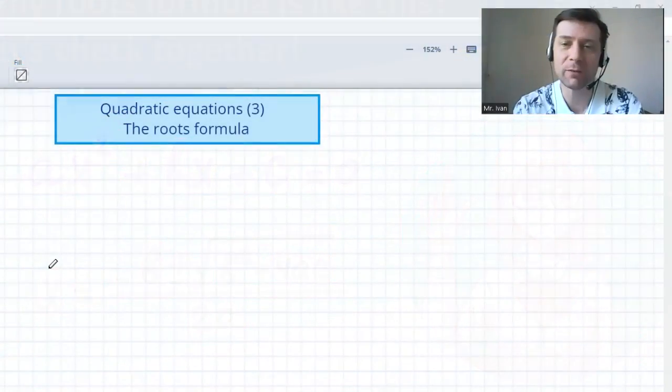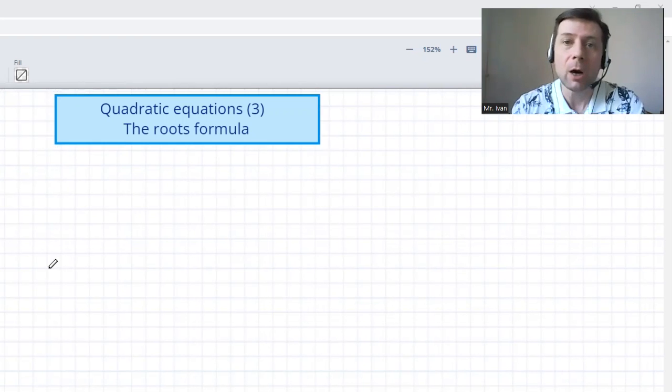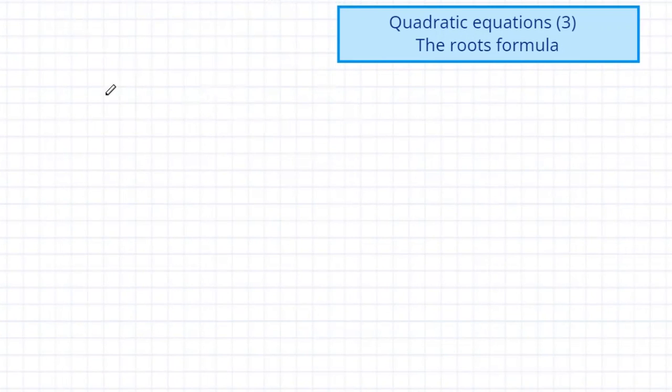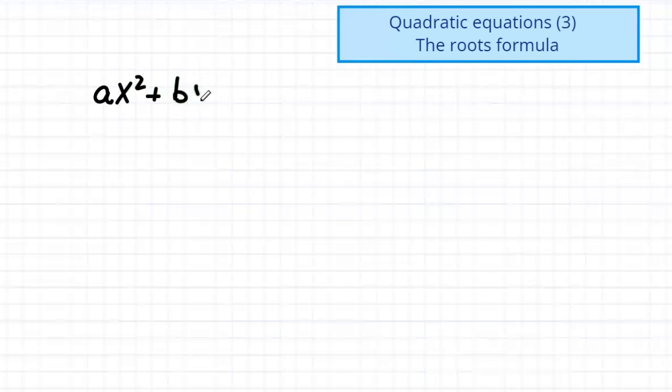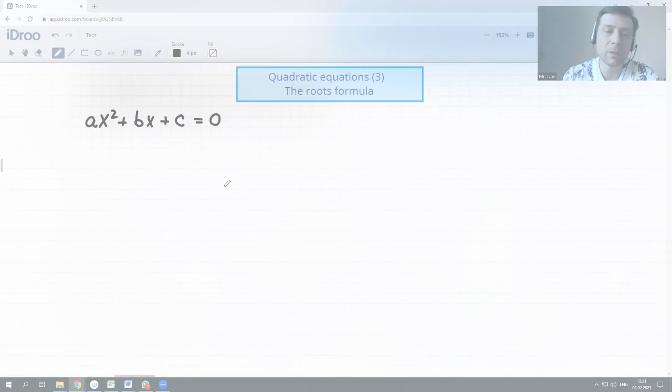Hi, welcome everyone who loves physics and math. Let's talk today about the roots formula of the quadratic equation, how to derive it, and why it is shaped as it is. The basic shape of a quadratic equation is ax squared plus bx plus c equals zero.